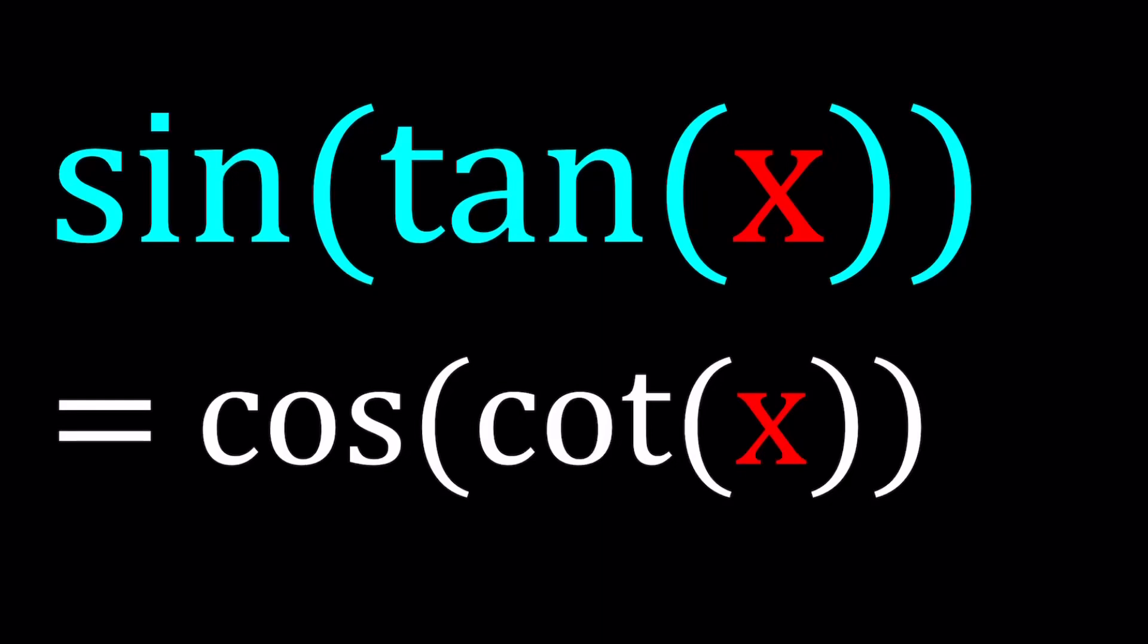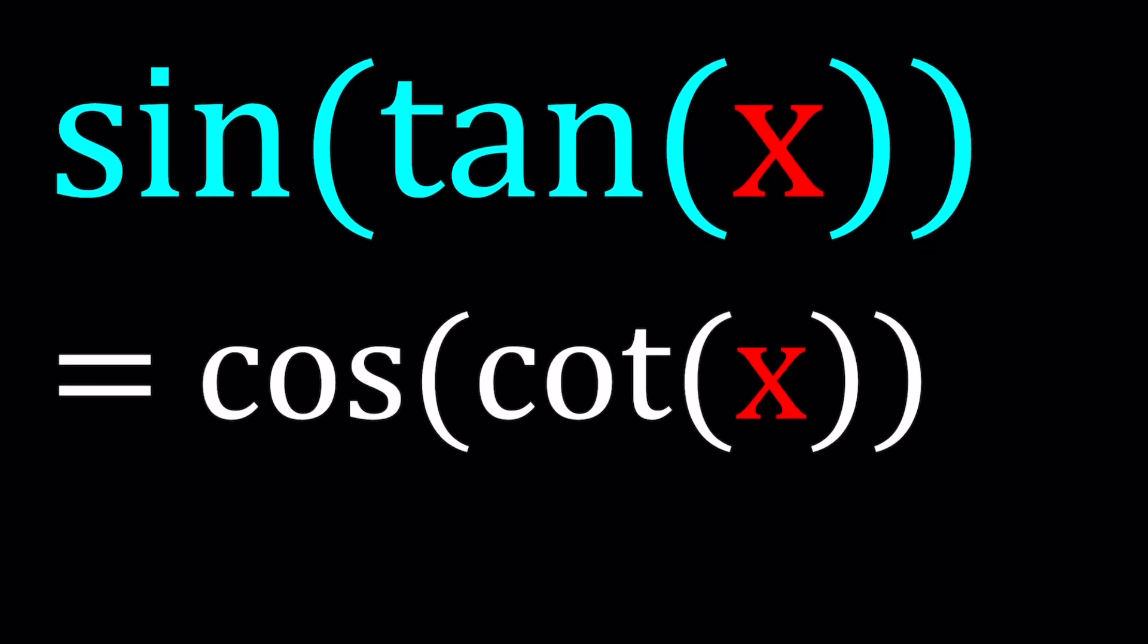Hello everyone, in this video we're going to be solving an interesting trigonometric equation. We have sine of tangent of x equals cosine of cotangent of x, and we're going to be solving for x values. We're also going to be taking a look at some results from Wolfram Alpha as well as Desmos. Let's see how we can solve this problem.